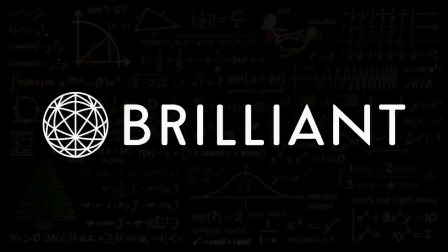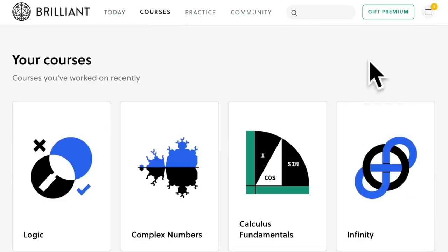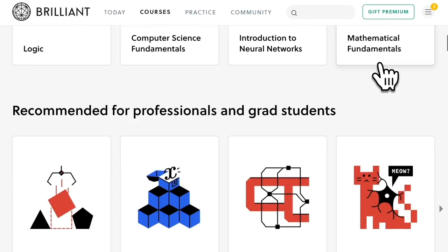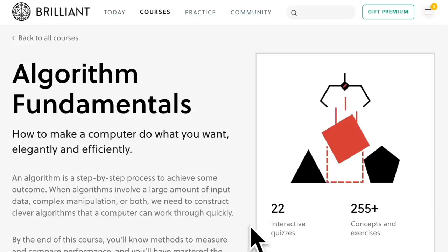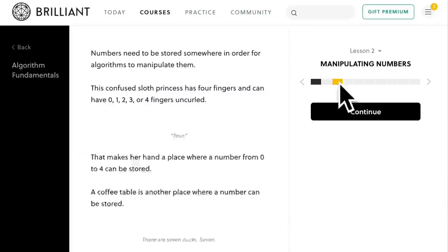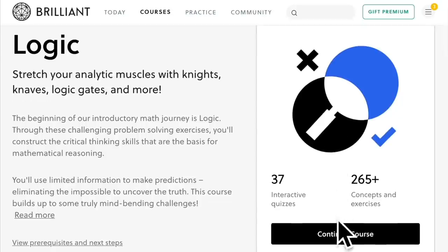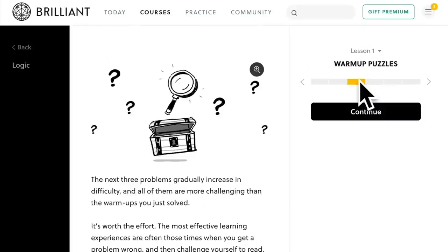So if you find math interesting then I think you'll also like Brilliant. Brilliant's one of the best websites for math and science and I've been a long-term user because of the variety of courses that they have. Currently they have over 60 interactive courses in math, science and computer science. These classes are designed to make math fun and engaging.